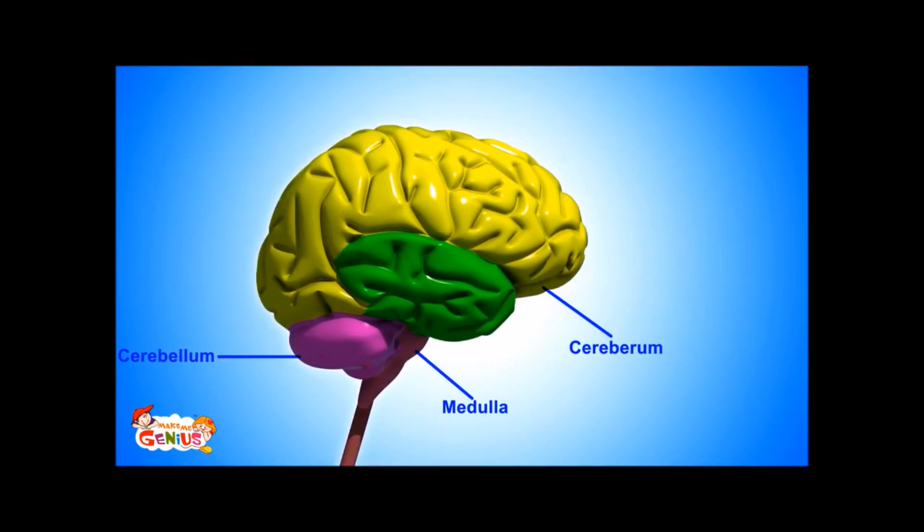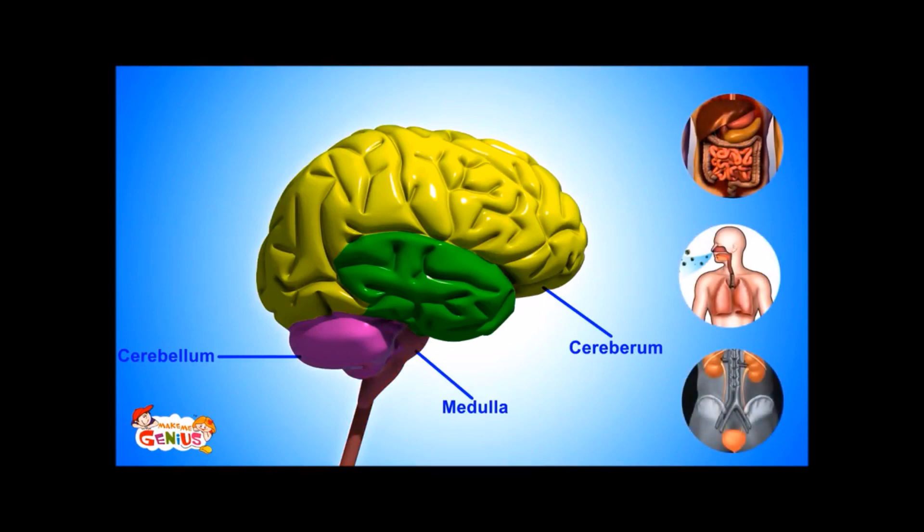The third major part is the medulla. It is also known as the brain stem. It does a few things which are called involuntary actions. It controls our digestion, heartbeat, and breathing. These things happen automatically in our body. We don't have to put any effort here.